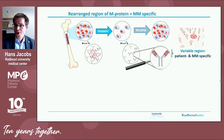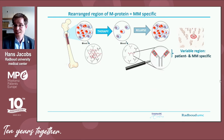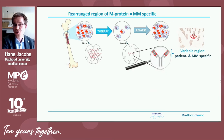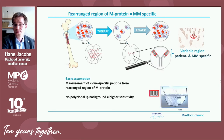Each myeloma patient produces a unique monoclonal antibody. The sensitivity of current M protein diagnostics is limited because each individual also produces normal antibodies, and in patients who respond well to therapy, these normal antibodies strongly outnumber the monoclonal antibodies. Each M protein has a unique rearranged variable region, illustrated here as a patient-specific barcode. Using the genetic information of the clonal plasma cells, we can read this barcode — a short stretch of protein unique for one specific patient and only produced by the myeloma cells. Measuring this barcode means measuring a cancer-specific biomarker with no interference from normal antibodies.